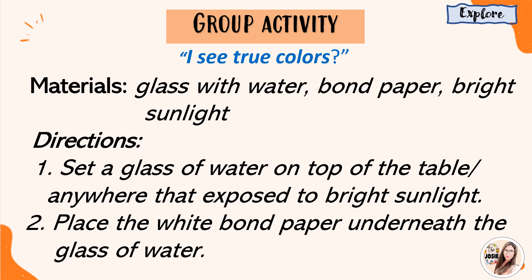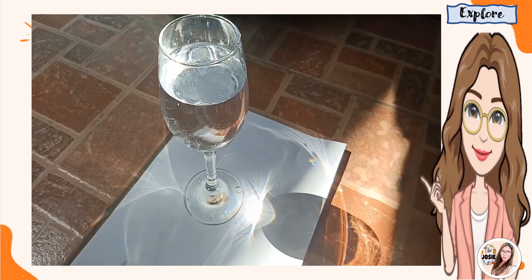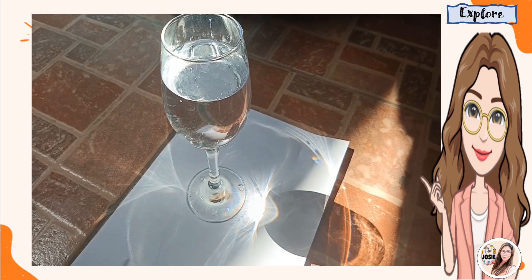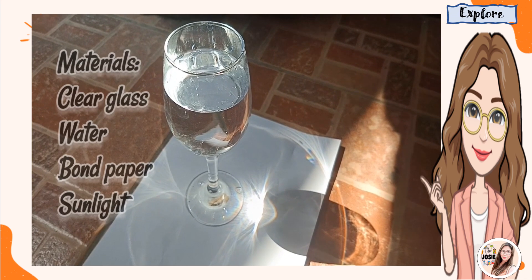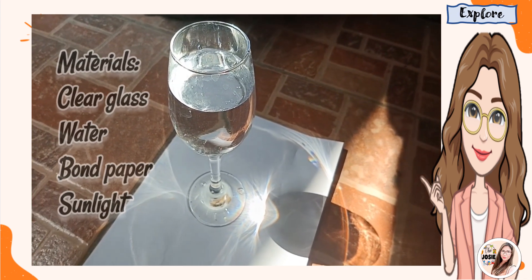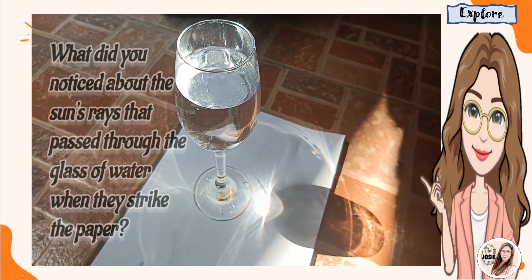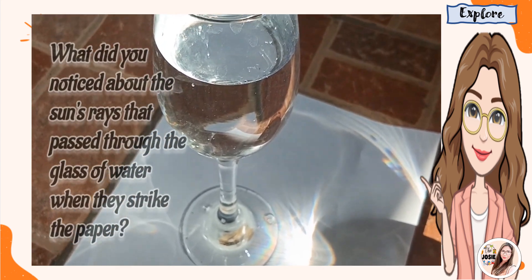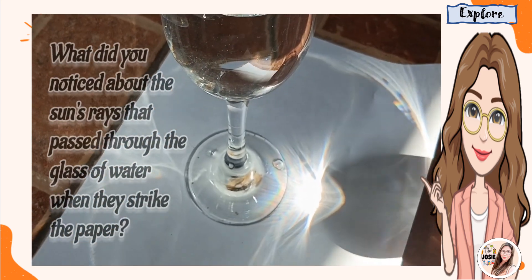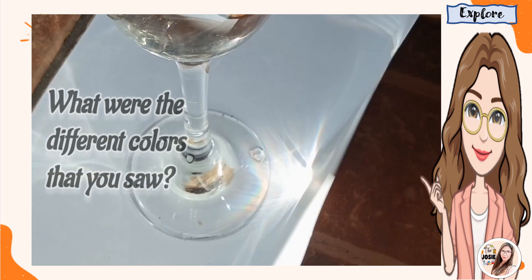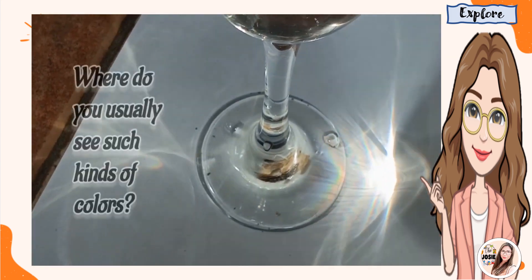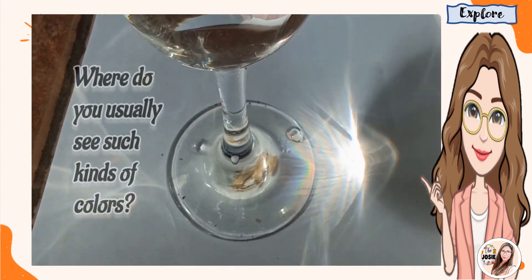Second, place the white bond paper underneath the glass of water. If you don't have the materials with you, you can watch and observe this simple video clip. Here are the materials: clear glass, water, bond paper, and sunlight. Please watch and observe. What did you notice about the sun's rays that passed through the glass of water when they strike the paper? What were the different colors that you saw? Where do you usually see such kinds of colors?